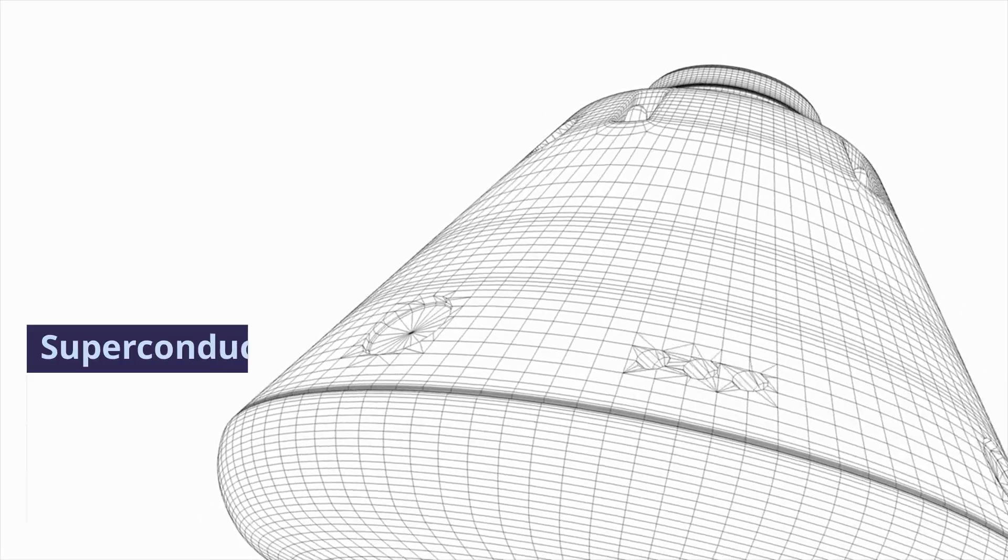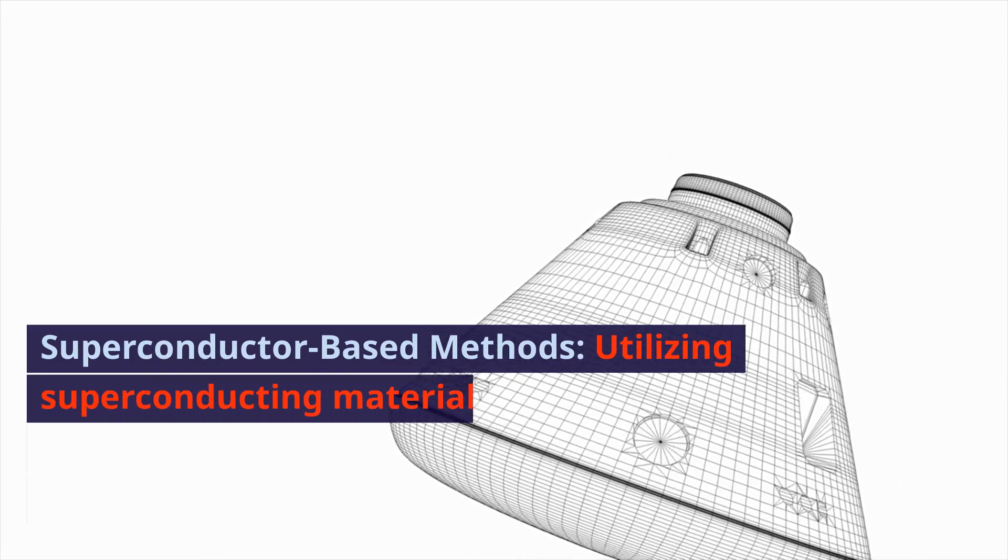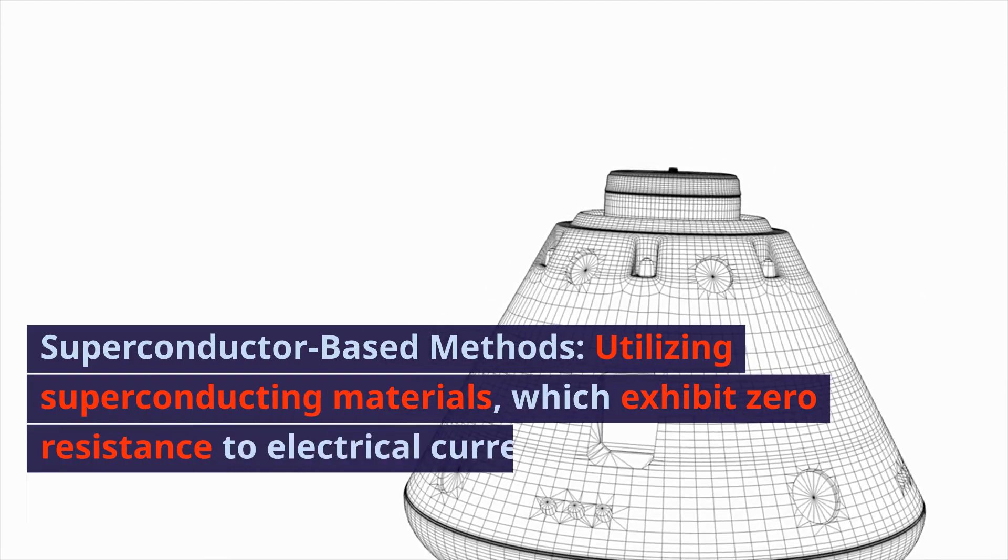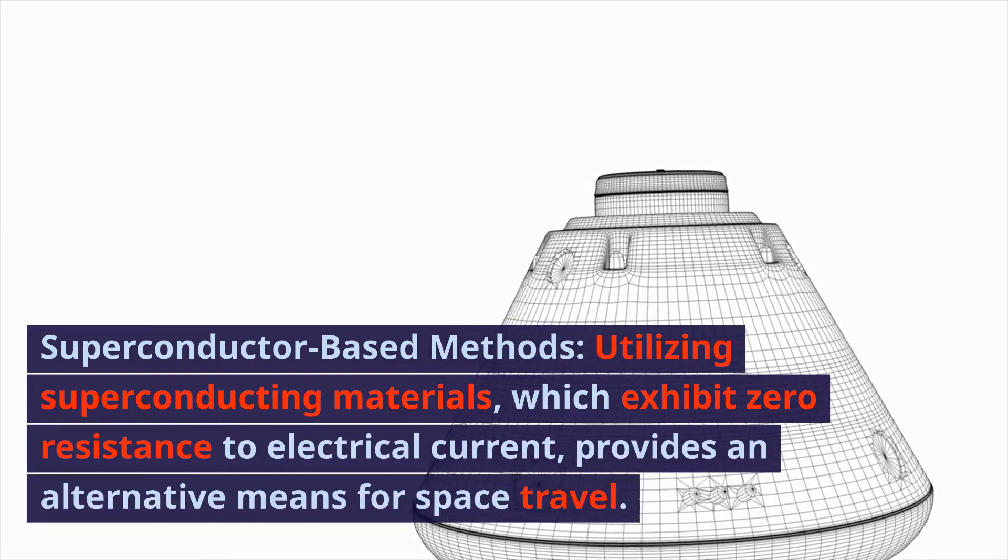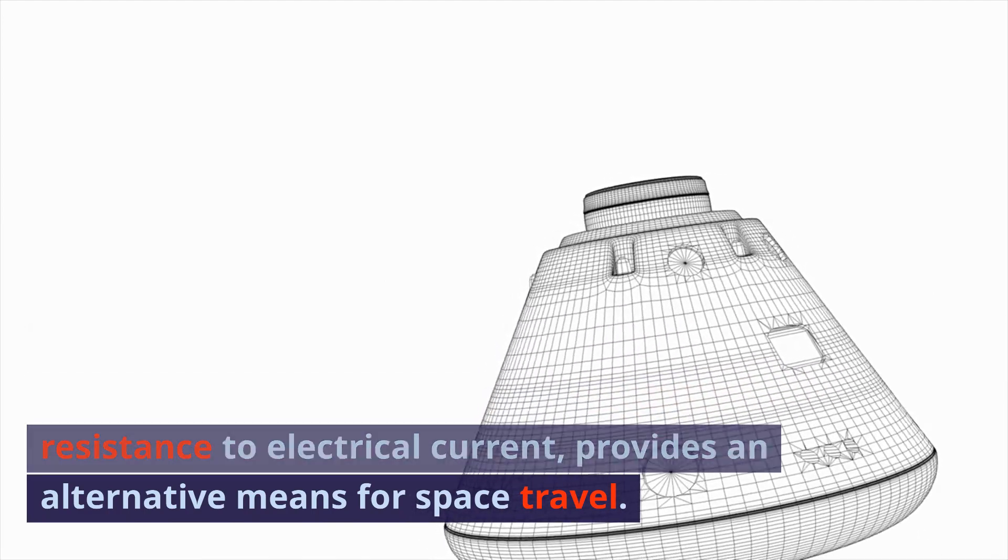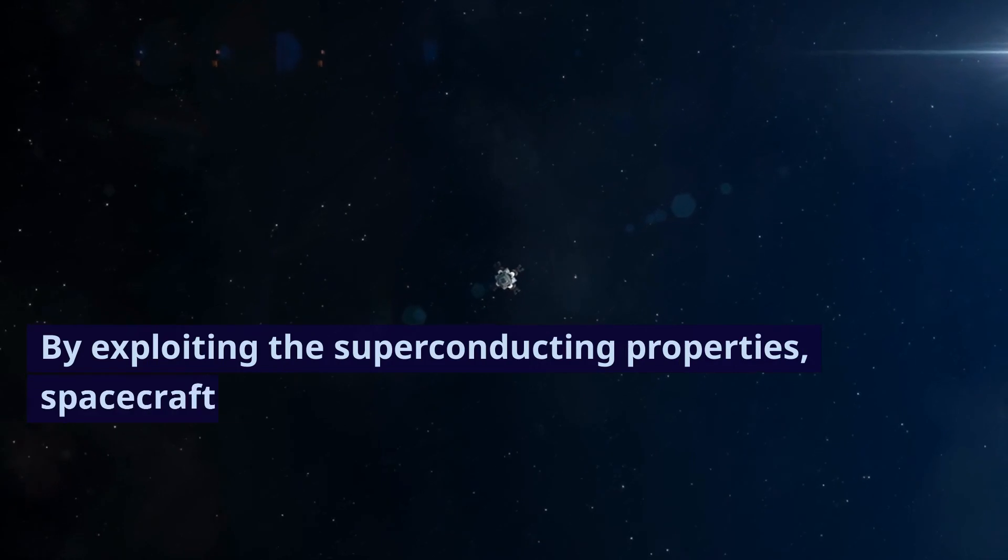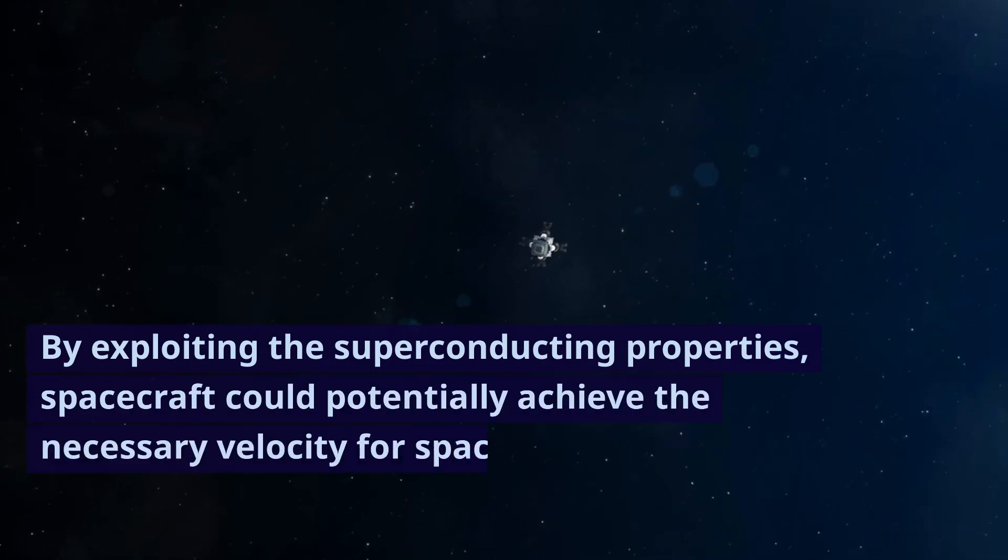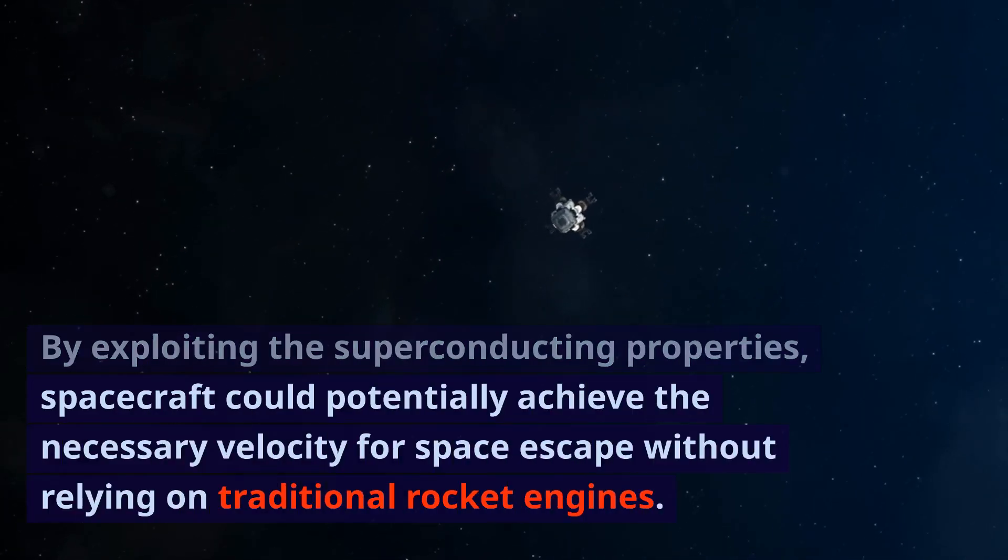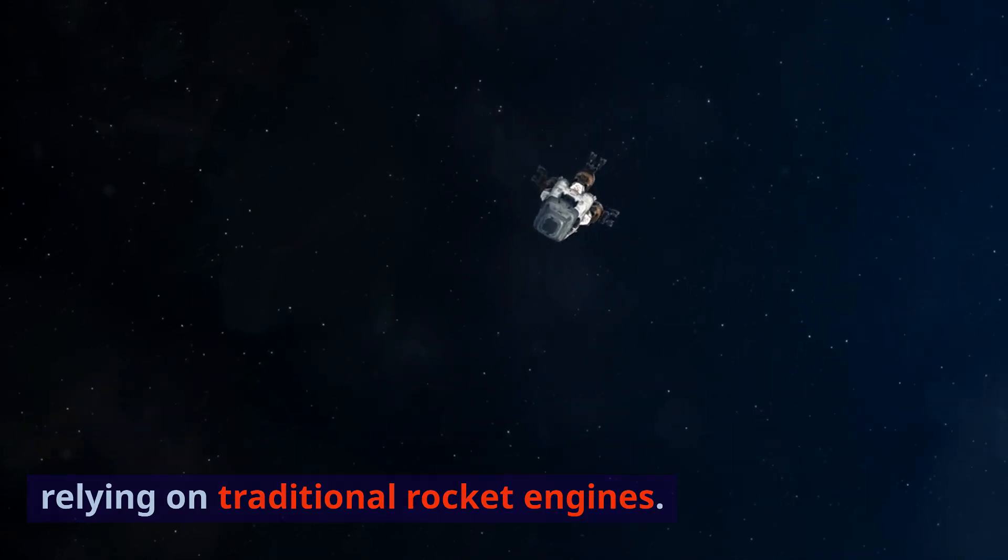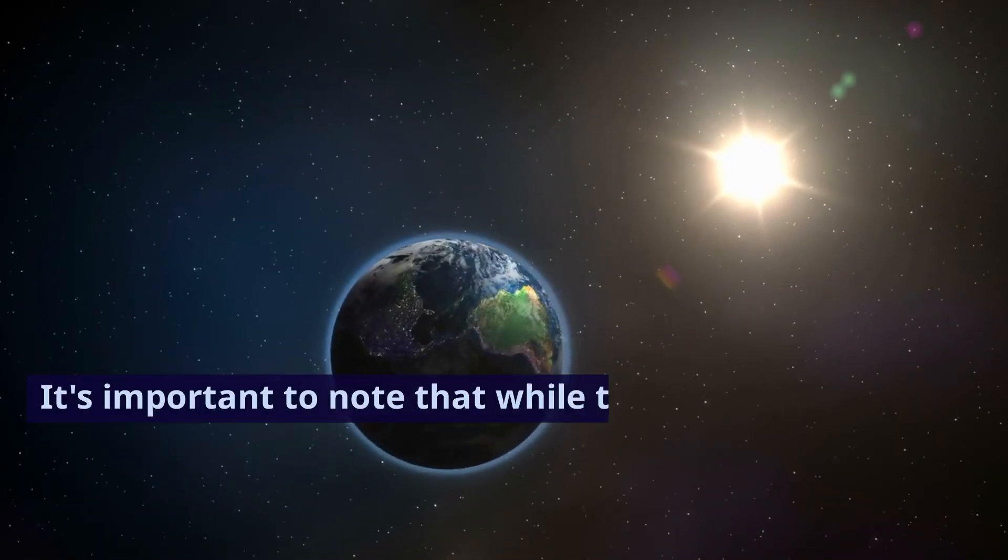Method 4: Superconductor-based methods. Utilizing superconducting materials, which exhibit zero resistance to electrical current, provides an alternative means for space travel. By exploiting the superconducting properties, spacecraft could potentially achieve the necessary velocity for space escape without relying on traditional rocket engines.